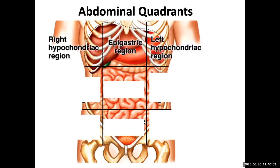Starting with the upper right and left, we get what's referred to as the hypochondric regions. The hypochondric regions are the regions in the superior part of the abdominal pelvic cavity that is still covered by the costals — by the bones of the thoracic cage, or what people refer to as their ribs.